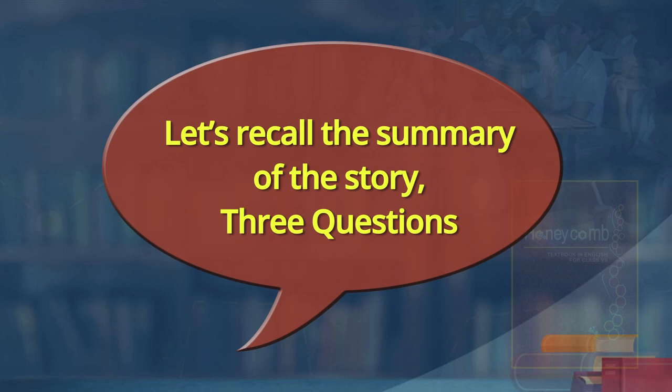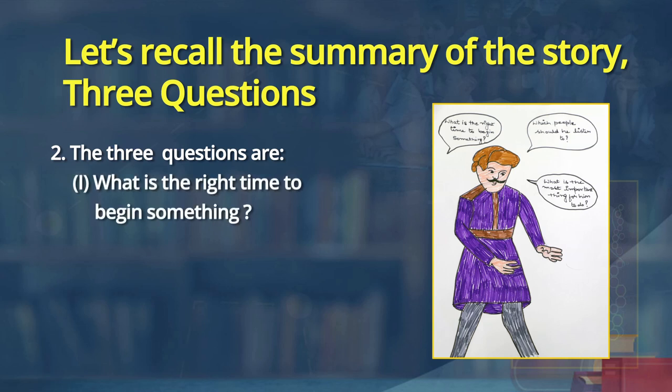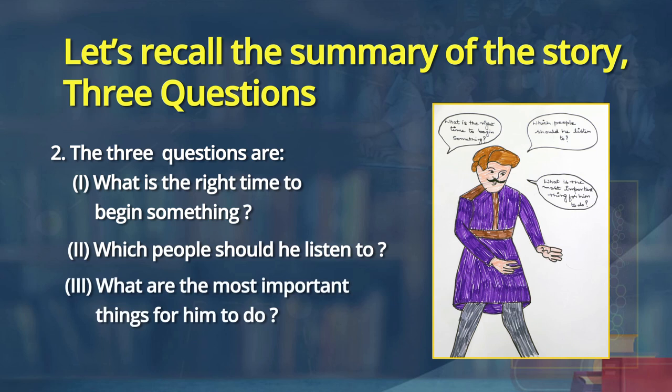I am going to ask you to narrate the summary of the lesson, which we have done in both Part 1 and Part 2, so that learners know the story very well. Let us recall the summary of the story 'Three Questions.' Once there was a king who had three questions in his mind. He wished to know the answers to be a successful ruler. The three questions are: what is the right time to begin something, which people should he listen to, and what are the most important things for him to do?